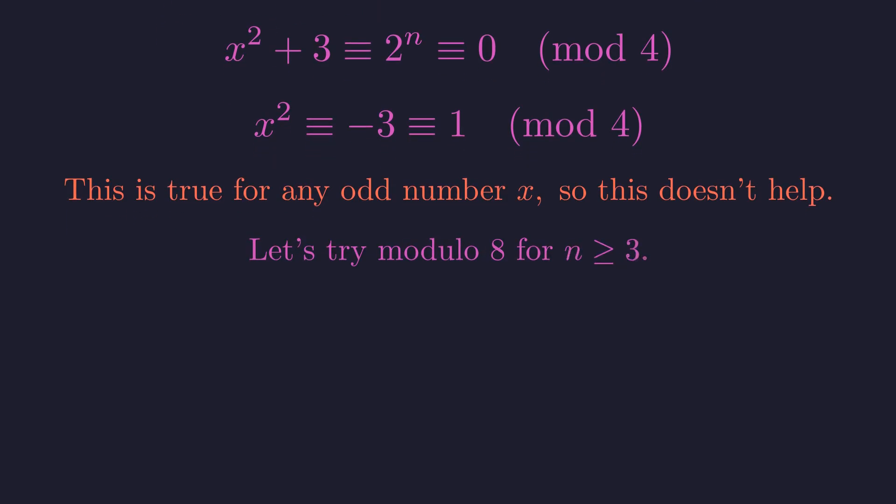That's an excellent point. We're not guessing randomly. Choosing a modulus that's a higher power of 2 often reveals more structure. Since 2 to the n for n greater than or equal to 3 is always divisible by 8, looking at the equation modulo 8 is the most powerful choice we can make.